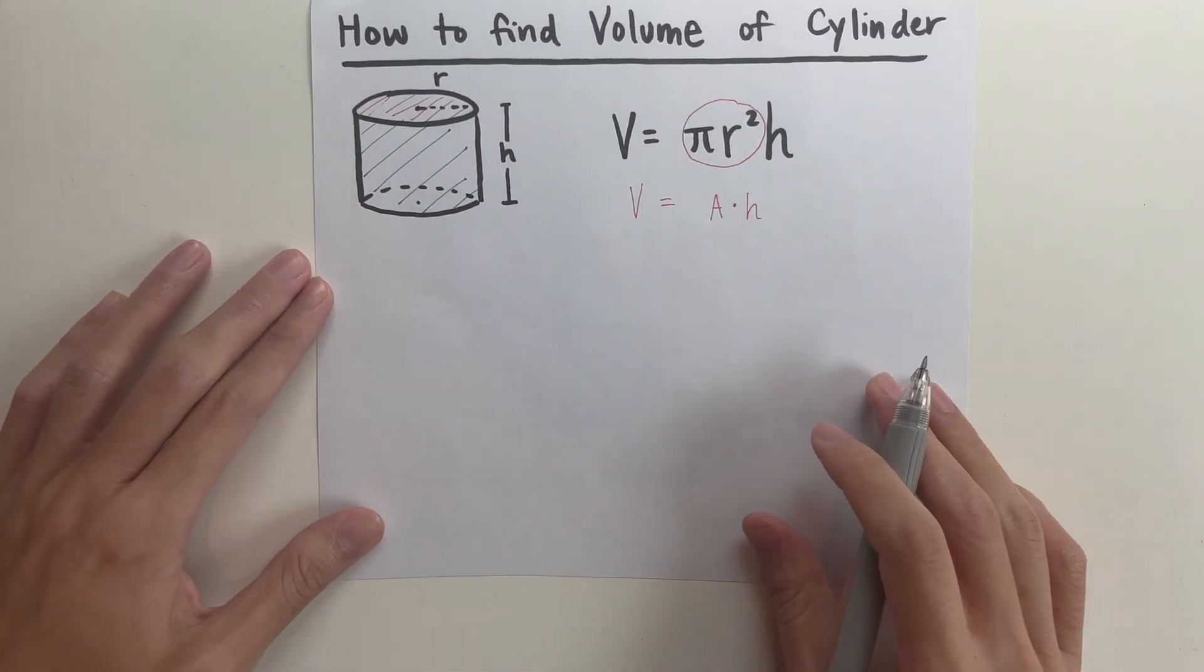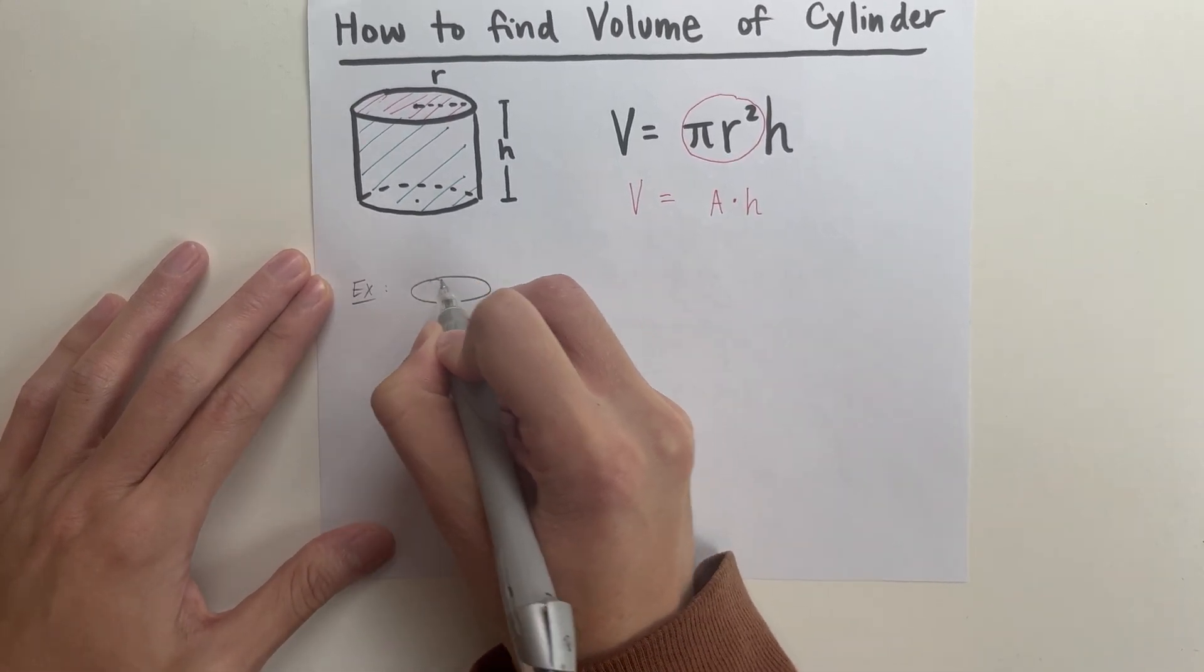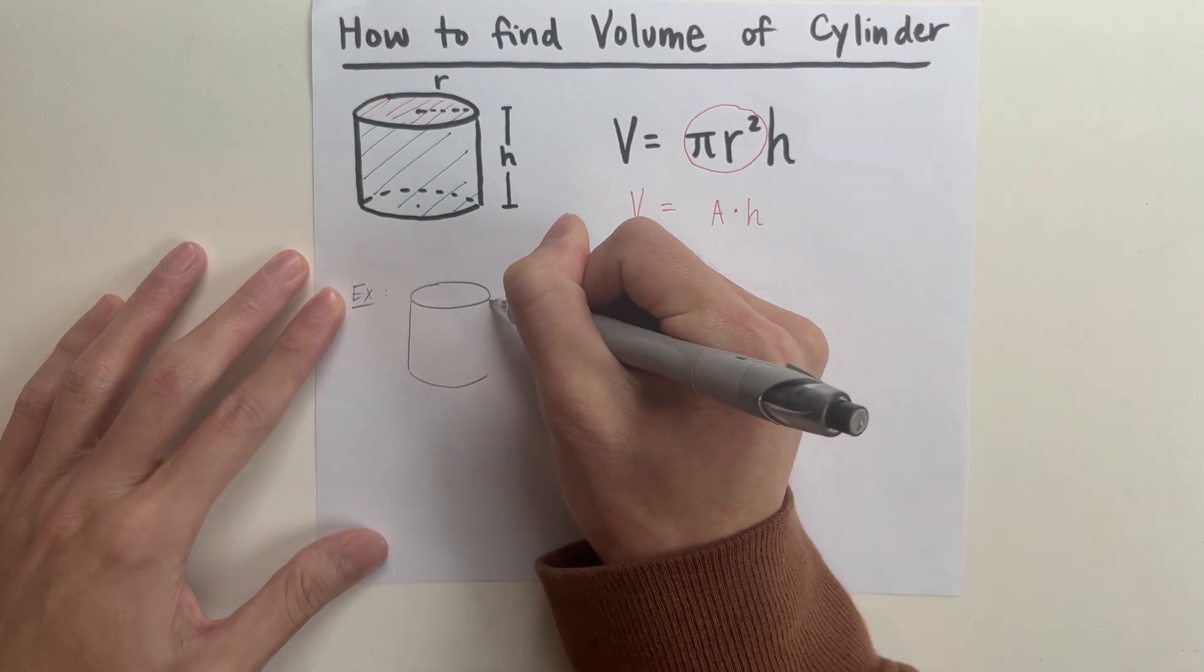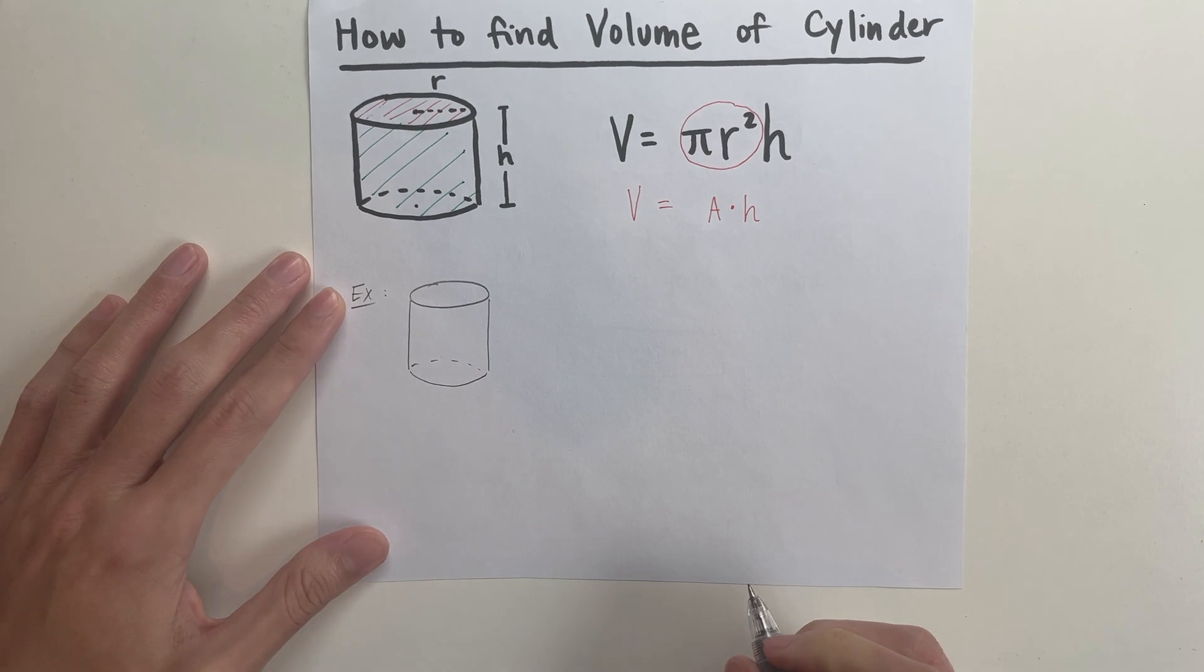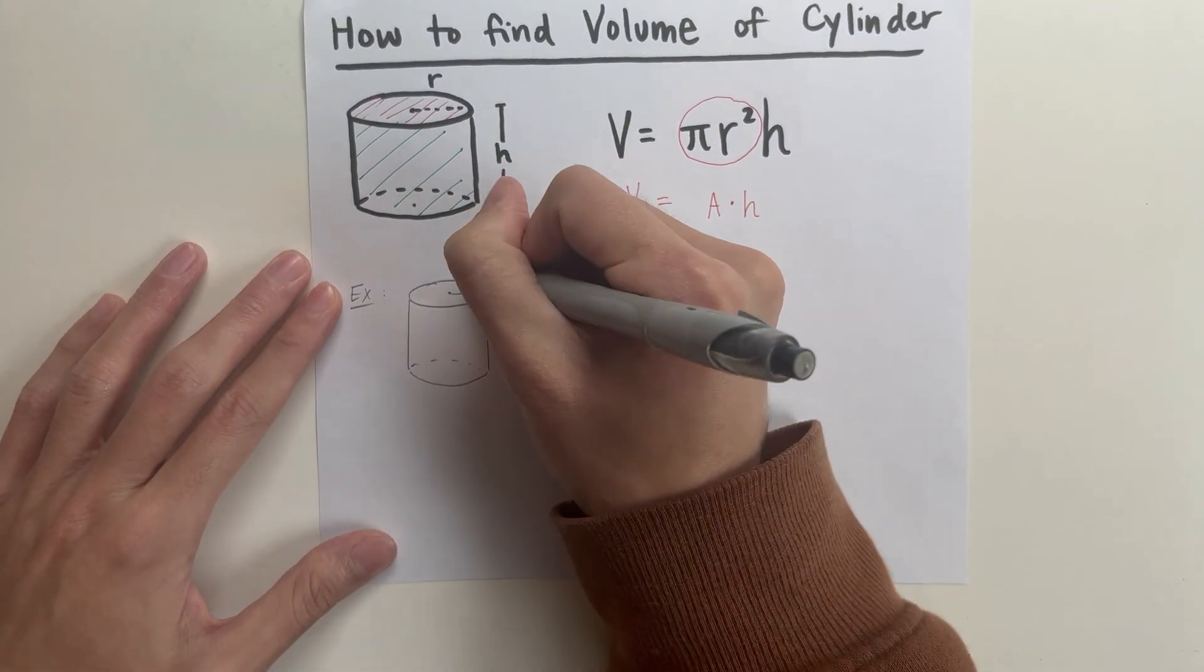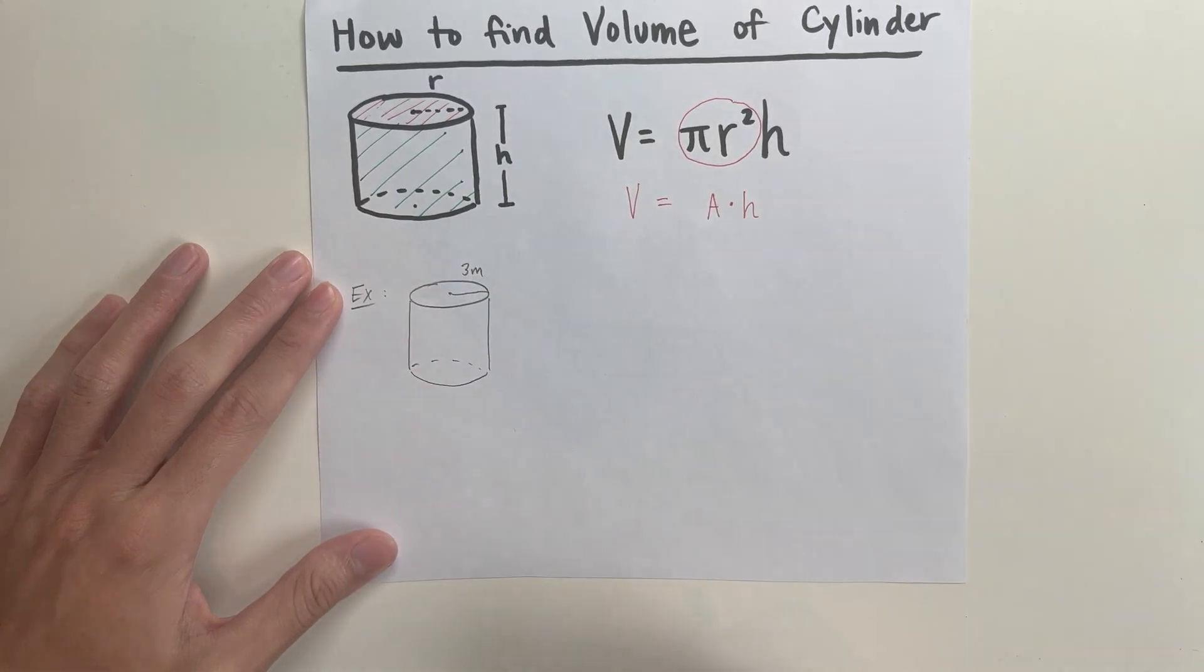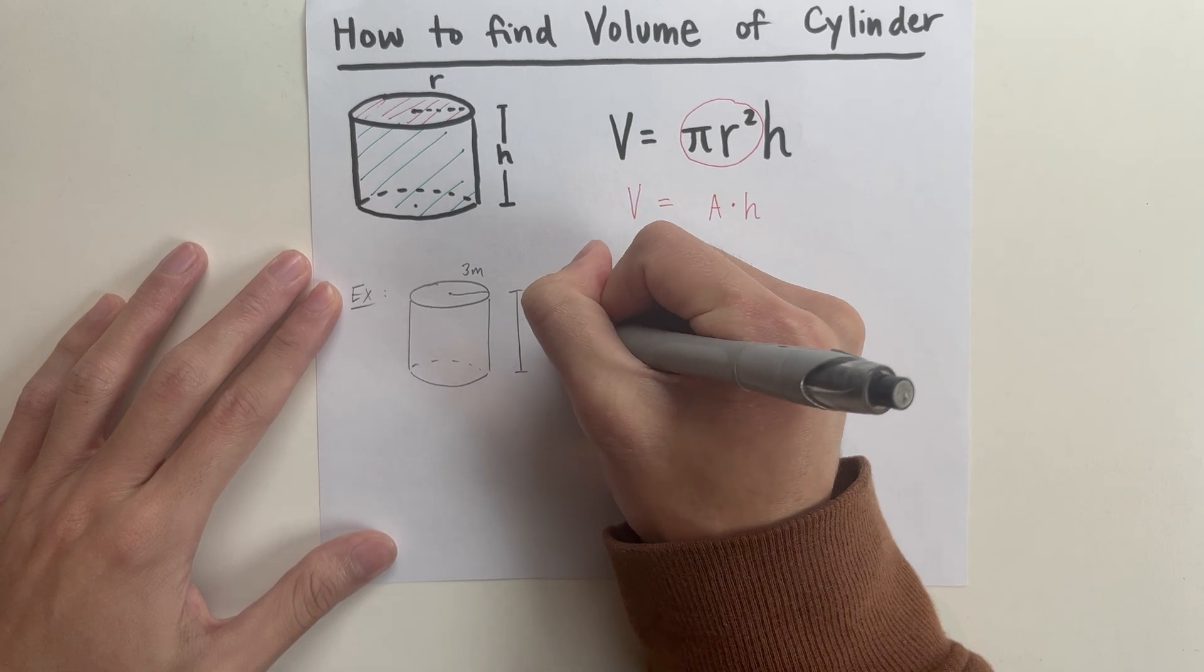Now I just want to go over one example today. Let's say we have a cylinder, same cylinder, but this time we're going to have actual units instead of r and h. This time let's say that the radius of the circle here is 3 meters, and the height of this cylinder is going to be 10 meters.